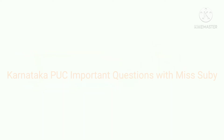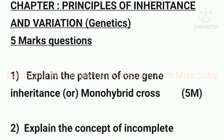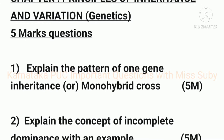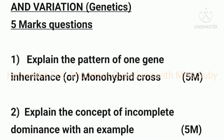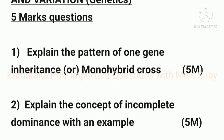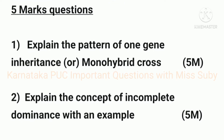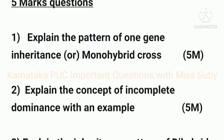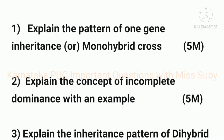Let us start with the video. Today we will see five-mark important questions from the chapter Principles of Inheritance and Variation. The first question is: explain the pattern of one gene inheritance or monohybrid cross — it carries five marks. The second question is: explain the concept of incomplete dominance with an example — it also carries five marks.